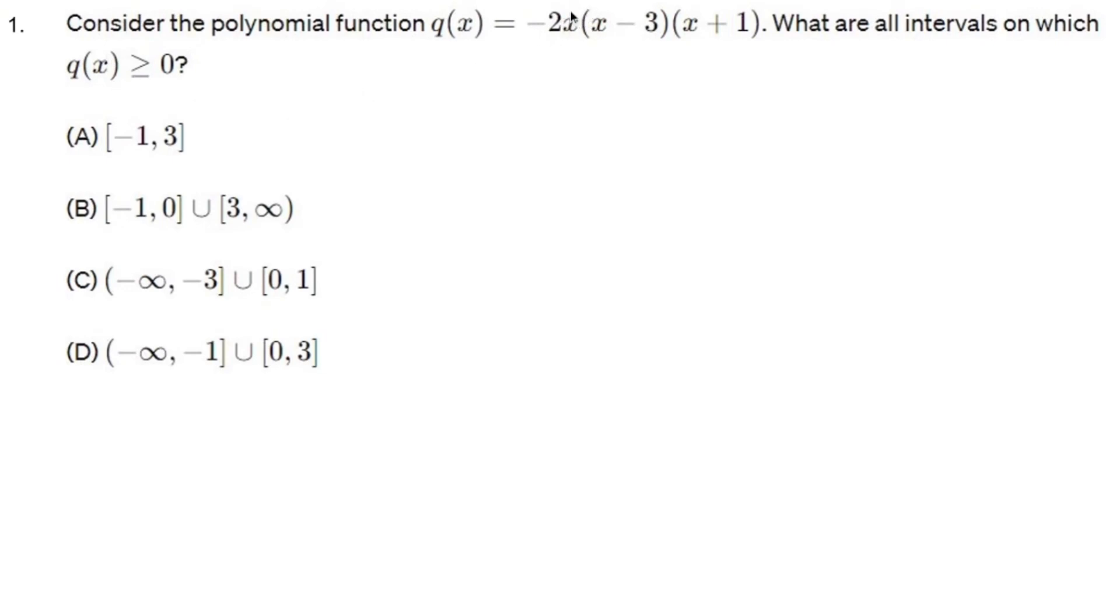Alright, so what do we have? We have something times something times something. Whenever you have a problem like this, you take the x values in each parentheses and each factor and multiply them together. Negative two times x times x times x is negative two x cubed. The rest you would foil out, but it doesn't really matter.